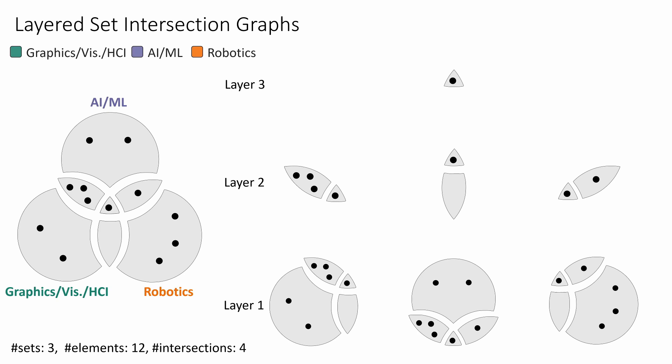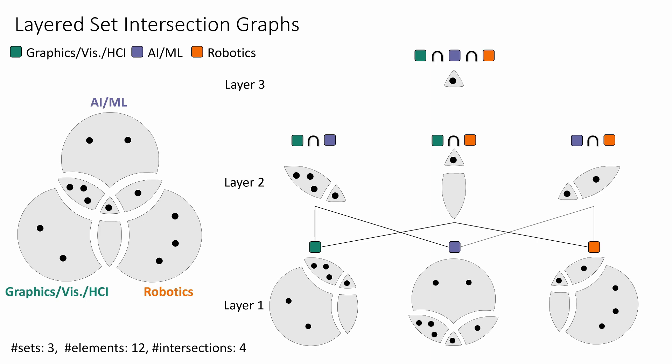To identify base sets involved in each intersection, we use color: Graphics with HCI is shown in green, AI/ML in purple, and Robotics in orange. Each region becomes a node in the set intersection graph. To construct edges, we use the direct subset relation between nodes — since all elements in the intersection of Graphics with HCI and AI/ML are present in Graphics with HCI, we draw an edge between the two nodes. The basic structure of layered set intersection graphs is ready, inspired by a concept lattice computed using formal concept analysis.